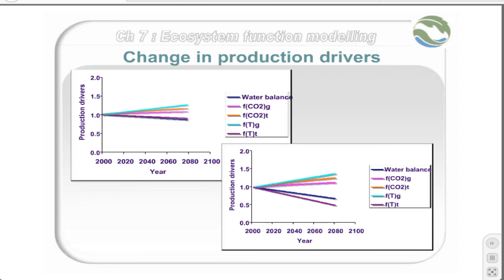As you can see, the trends are similar, but the extent of change in drivers differs between the two scenarios. For the first scenario, the water balance drops, and the increase in carbon dioxide will slowly increase the grass production and decrease tree production to a greater extent. The temperature increase will increase grass production and decrease tree production. The same drivers are true for the second scenario, but the extent of the drivers is much greater.